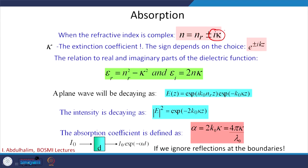When the refractive index is complex, it has a complex component as well. Till now, we had ε = n². Now, since n is complex, ε will also be complex. So ε equals the square of (nᵣ − iκ).